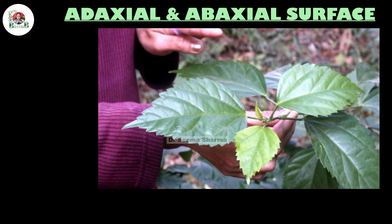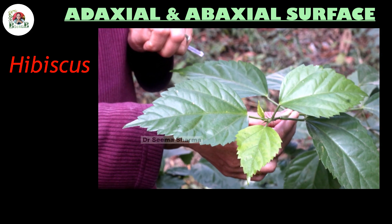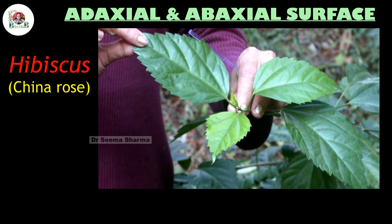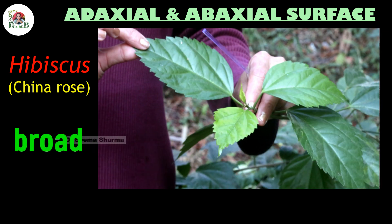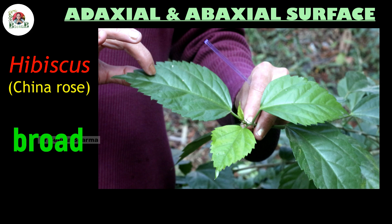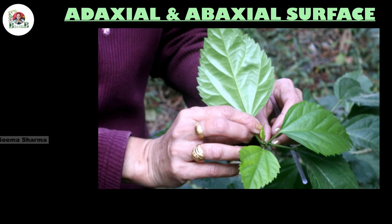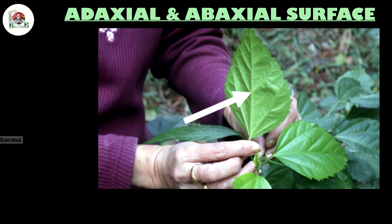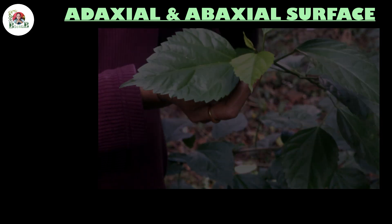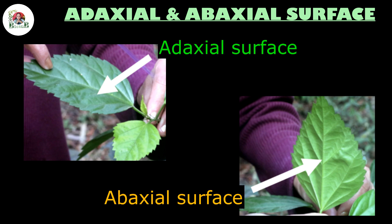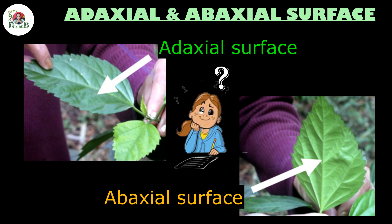Let us take this leafy twig of Hibiscus plant, which is also known as China rose. Look at its broad leaves. Each leaf has two surfaces — this one, and as I turn it, this one. You would have noticed that these are clearly different from each other. What is the criteria that enables us to categorize the surfaces as adaxial or abaxial?